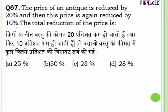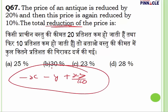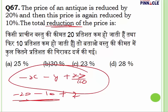Question number 67: price of an antique is reduced by 20 percent and then again by 10 percent. Using the successive percentage formula: net change equals minus 20 minus 10 plus (20 into 10)/100, which equals minus 30 plus 2 equals minus 28 percent. Total reduction is 28 percent. Answer is D.